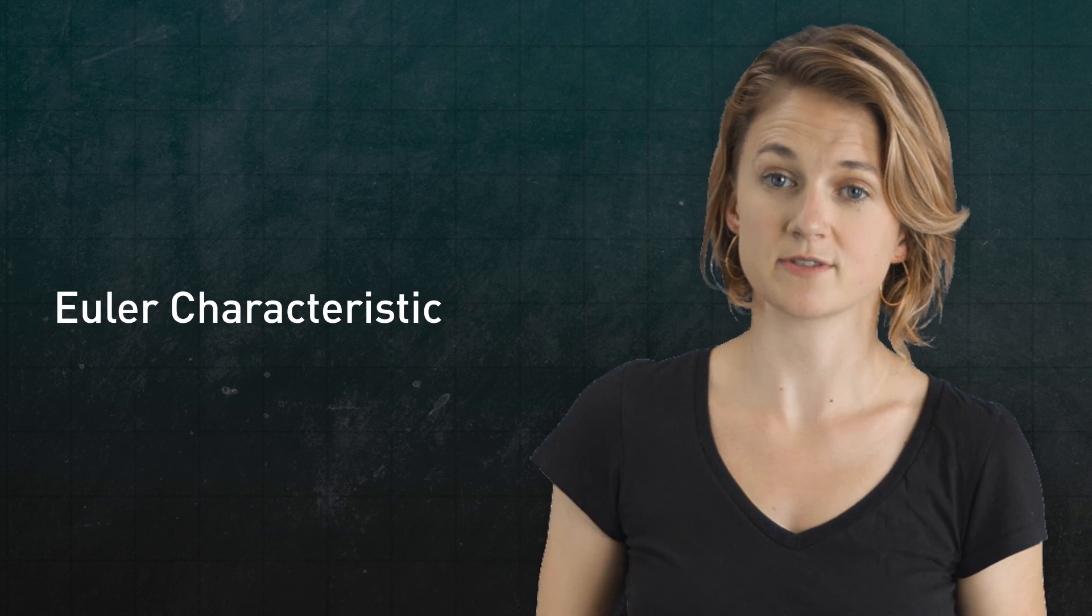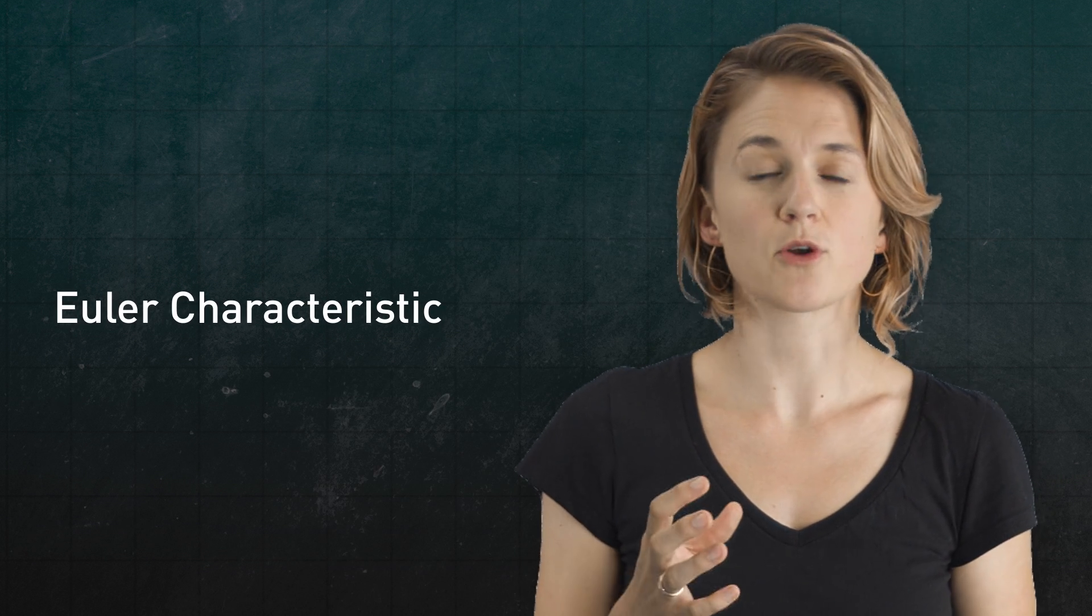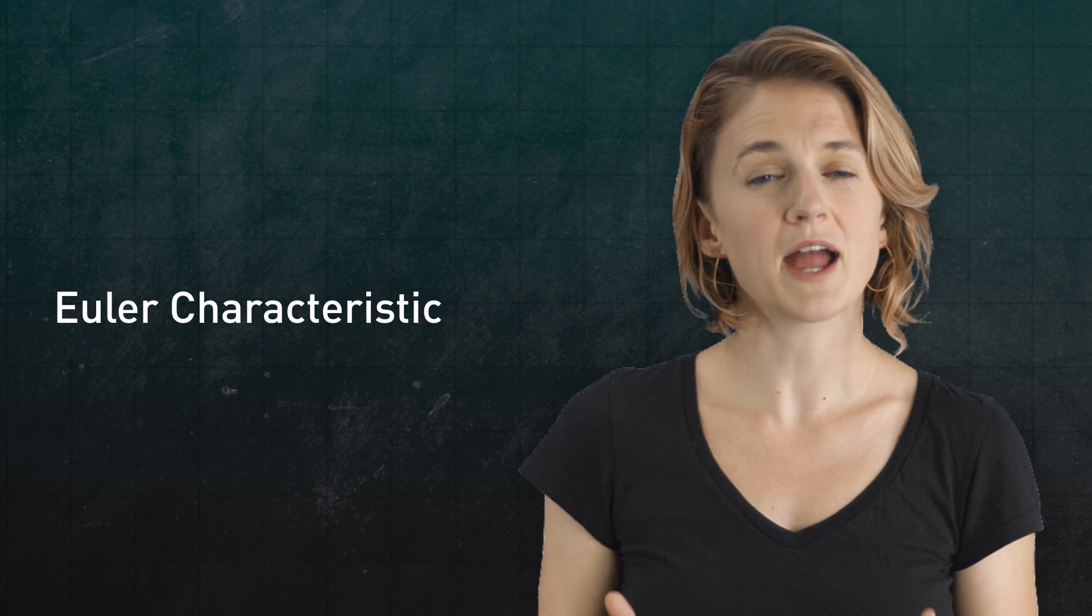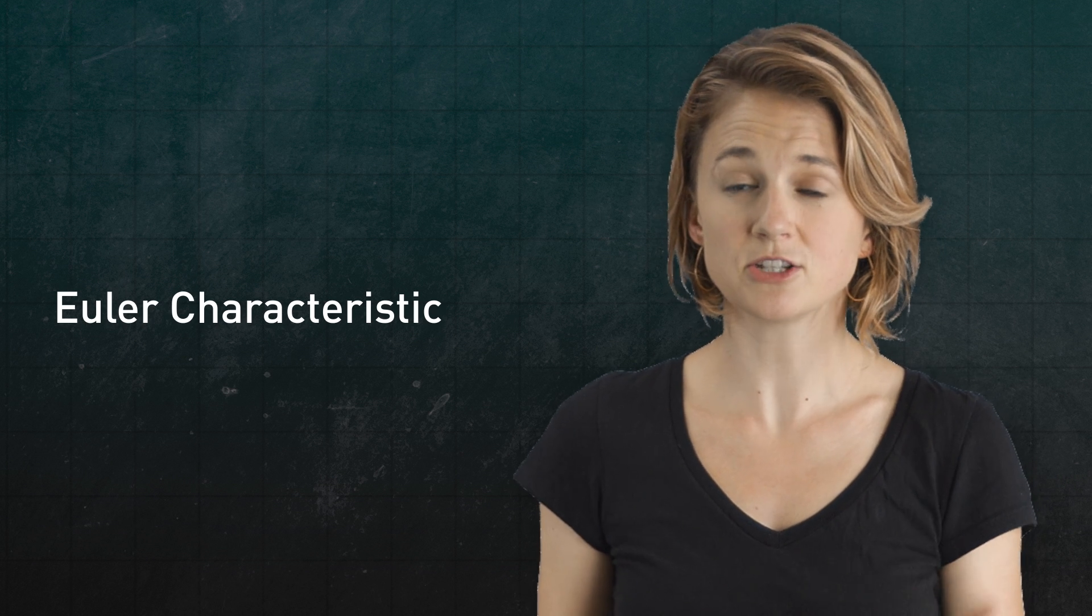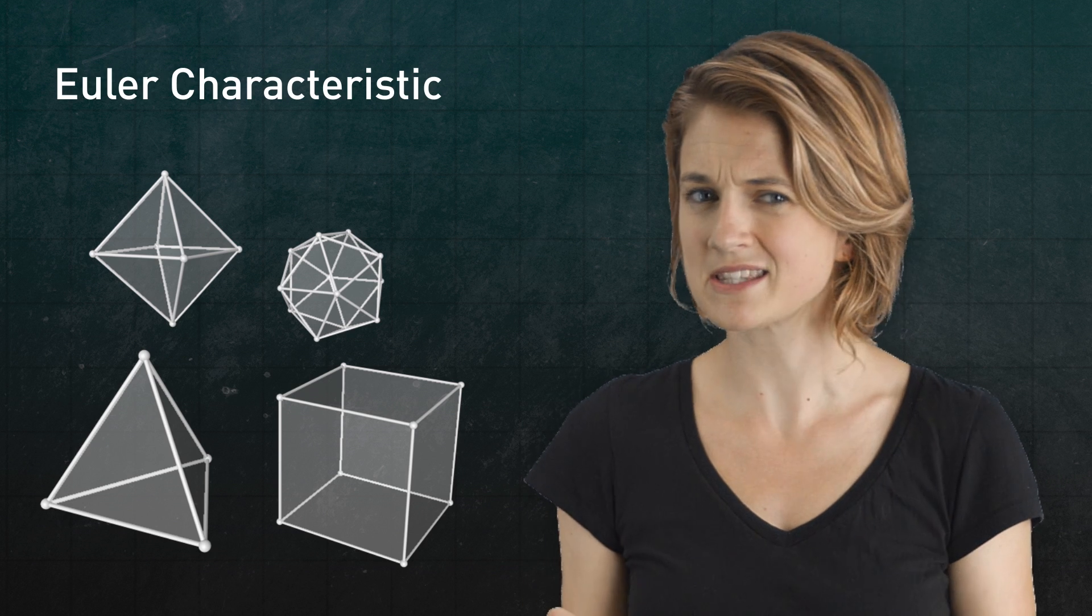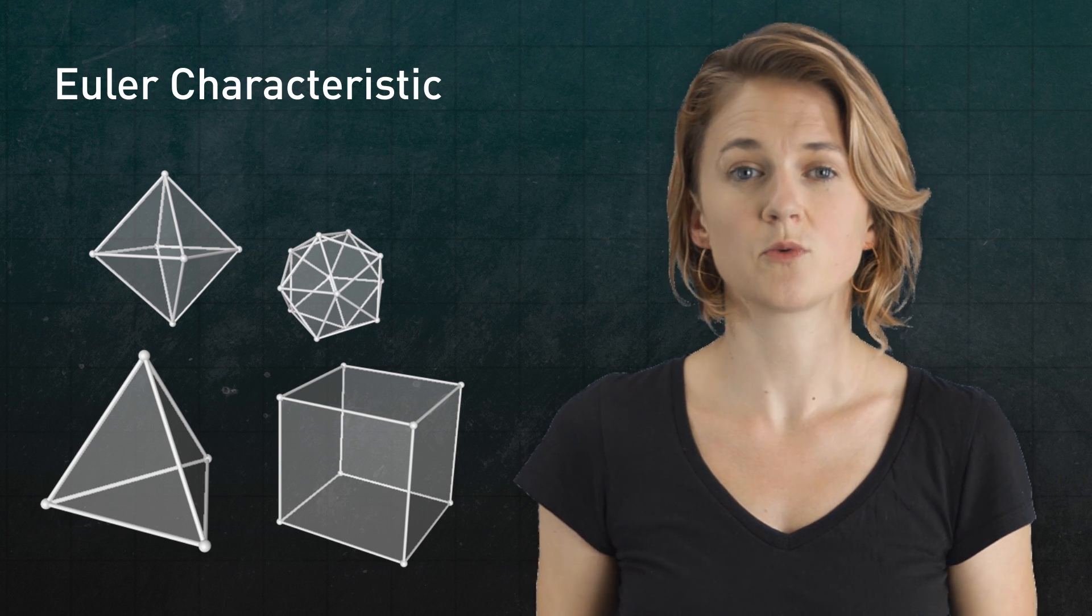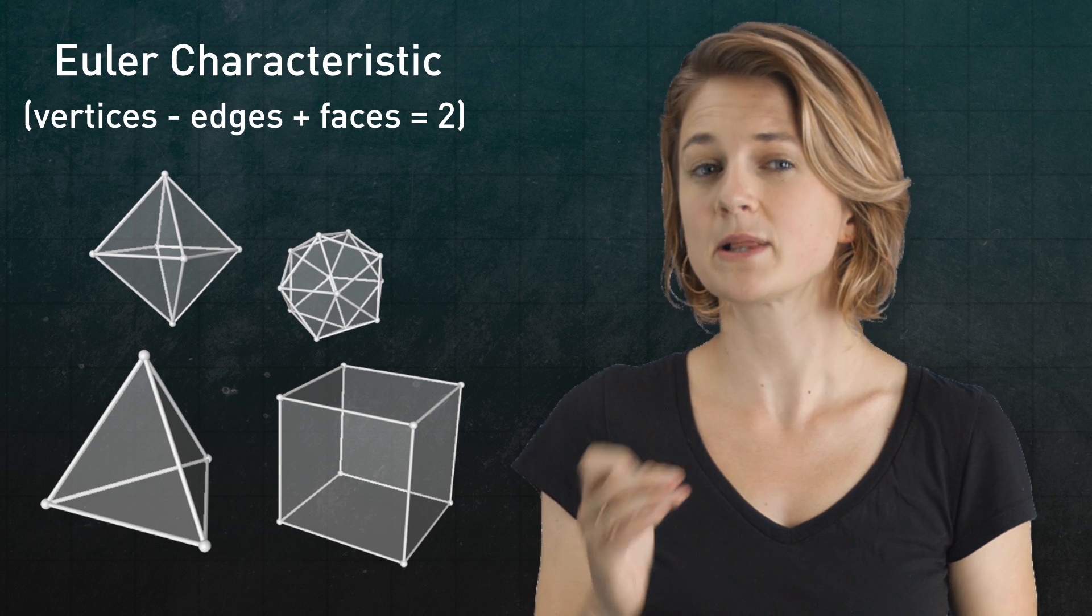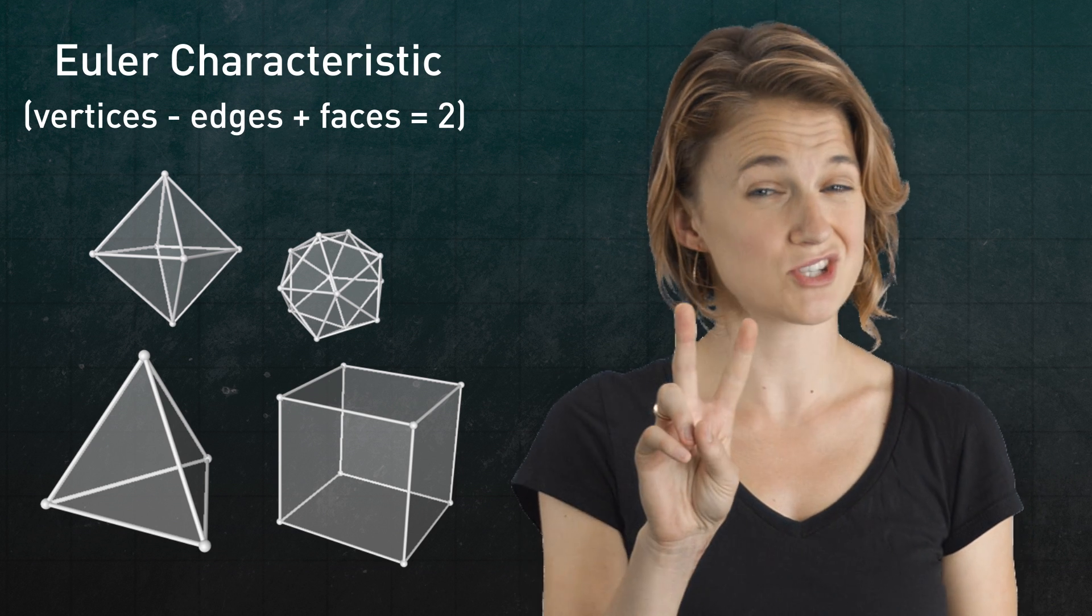The first is the Euler characteristic. Here was Euler's original observation. For any three-dimensional convex polyhedron, that means a shape like these without any holes or inward pits, the Euler characteristic, which is the number of vertices minus the number of edges plus the number of faces, is always two.